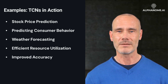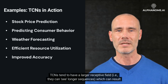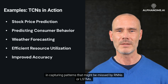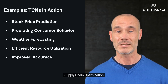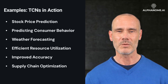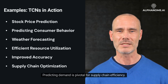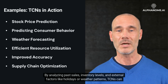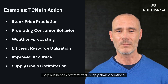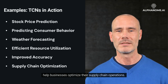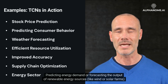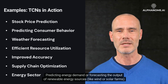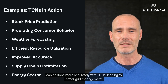Improved Accuracy: TCNs tend to have a larger receptive field — they can see longer sequences — which can result in capturing patterns that might be missed by RNNs or LSTMs. Supply Chain Optimization: predicting demand is pivotal for supply chain efficiency. By analyzing past sales, inventory levels, and external factors like holidays or weather patterns, TCNs can help businesses optimize their supply chain operations. Energy Sector: predicting energy demand or forecasting the output of renewable energy sources like wind or solar farms can be done more accurately with TCNs, leading to better grid management.